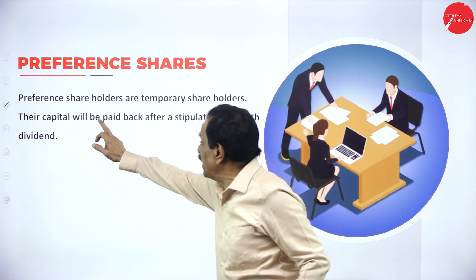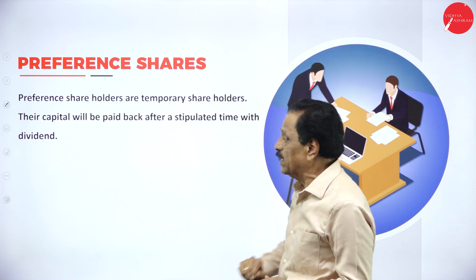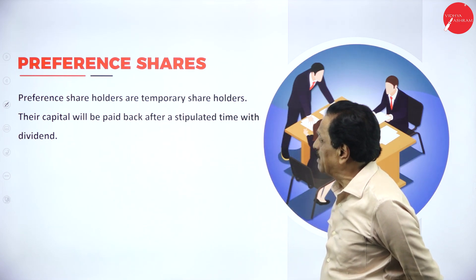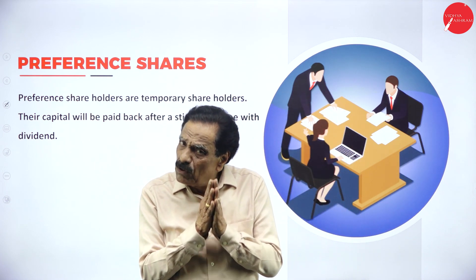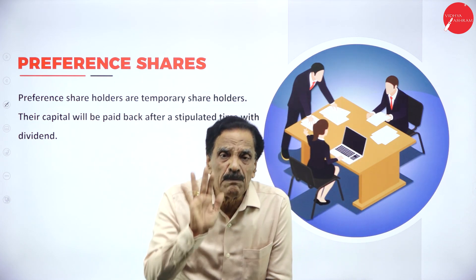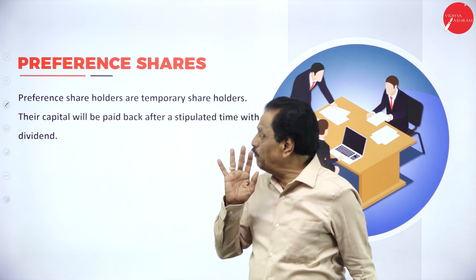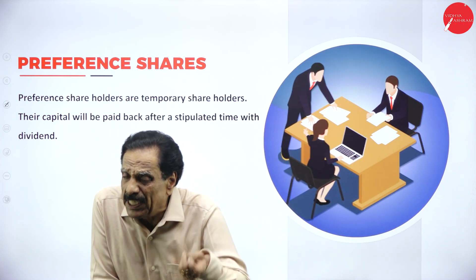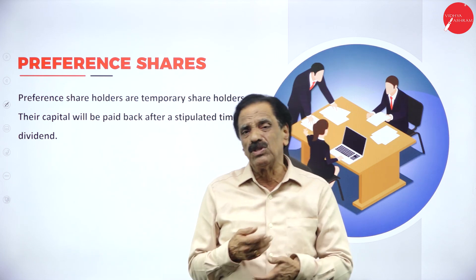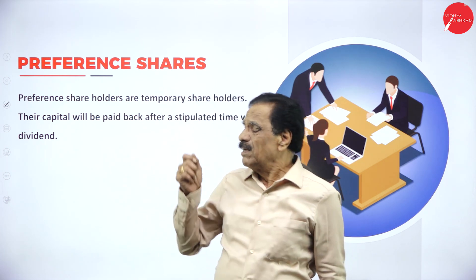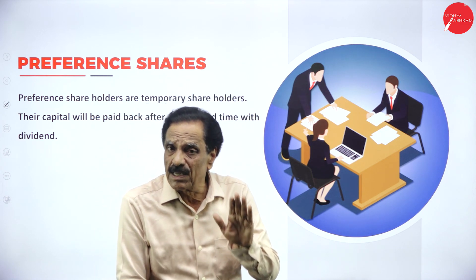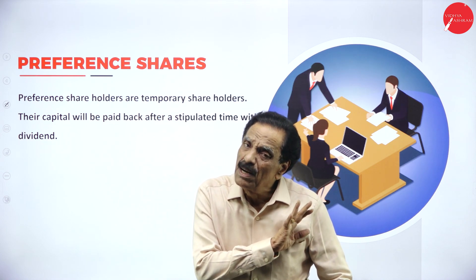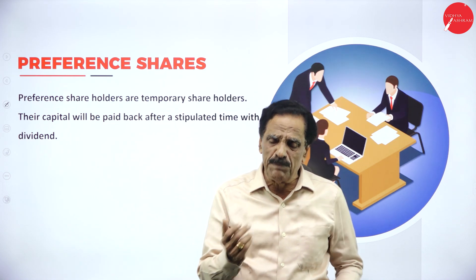Preference shareholders are temporary shareholders. Their capital will be paid back after a stipulated time along with dividend. They are not permanent shareholders. Whatever capital they paid, the company pays back their capital with dividend after the stipulated time — which may be 2 years, 3 years, or as specified.